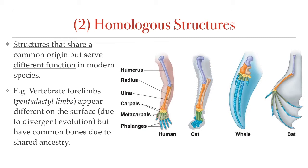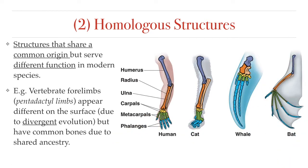A classic example of this is the forelimbs of vertebrates — bats, whales, cats, and humans. On the outside, the forelimbs of these animals are very different. A cat does not have hands, and the wing of a bat and the flipper of a whale are even more different. These limbs are all adapted to different environments and functions, like flying, swimming, running and capturing prey, or holding tools. But when you look at the bone structure of the forelimbs, the pattern of bones is very similar across all vertebrates. There is a humerus, a radius and ulna, wrist bones, and even hand and finger bones in all of these limbs. It's unlikely that such similar structures would have evolved independently in each species.